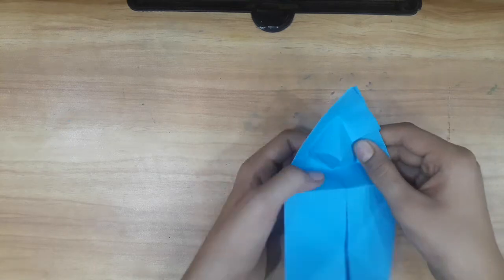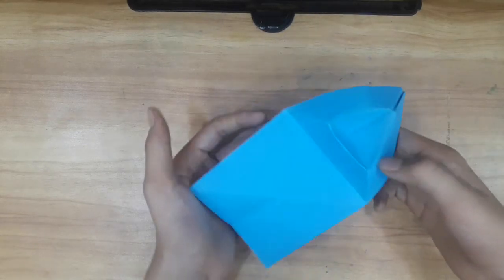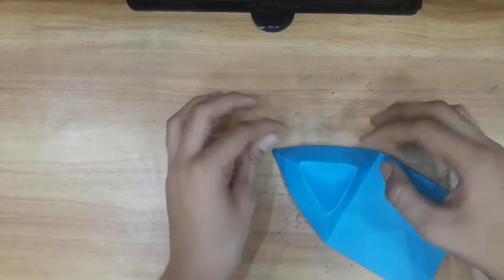So here you can see there is a triangle, a form of triangle, and from this side, here it is like this.